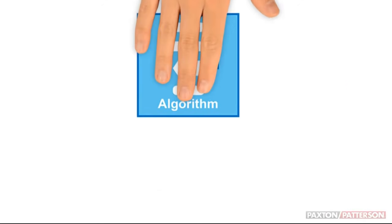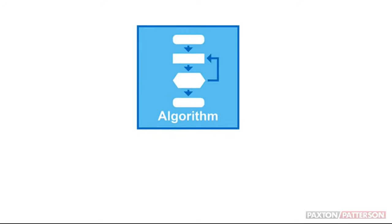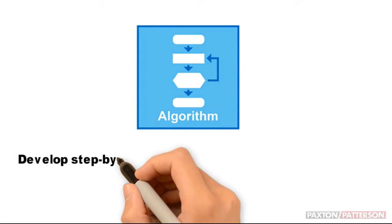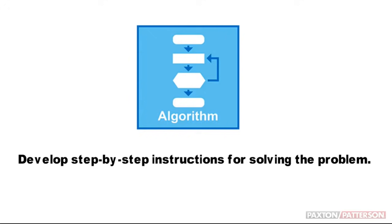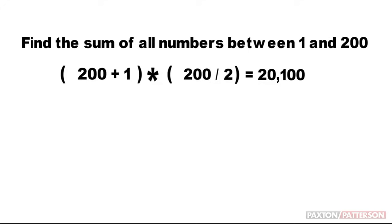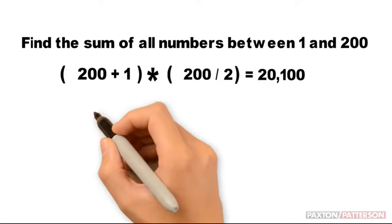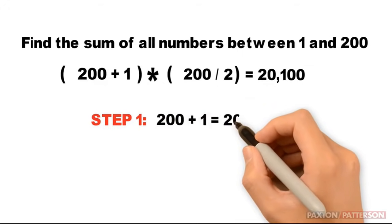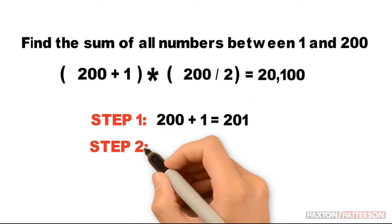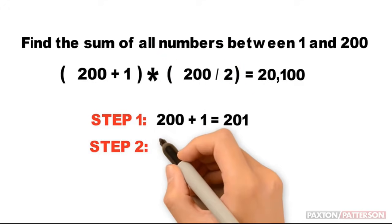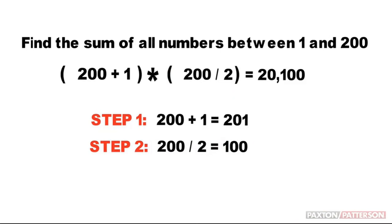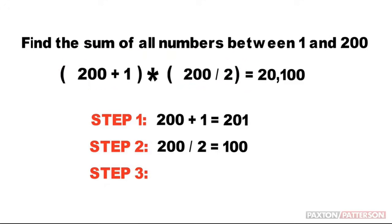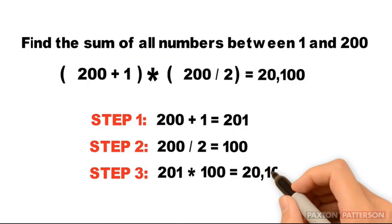The fourth and final step of the computational thinking process is algorithm design. Algorithm design involves developing step-by-step instructions for solving the problem, which you can use again to solve similar problems. In our original problem, we had to find the sum of all numbers between 1 and 200. Step 1: find the sum of 200 plus 1 — that equals 201. Step 2: find the quotient of 200 divided by 2 — that equals 100. Step 3: multiply the answers from step 1 and step 2 together — 201 times 100 equals 20,100.